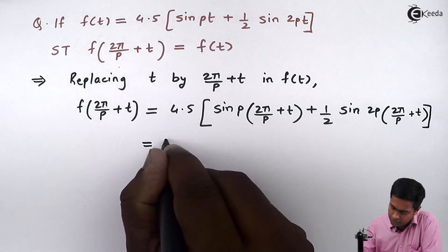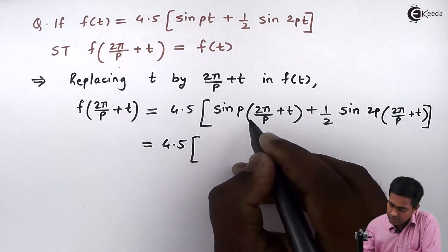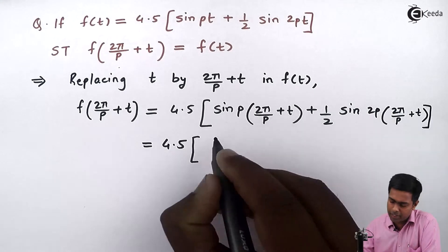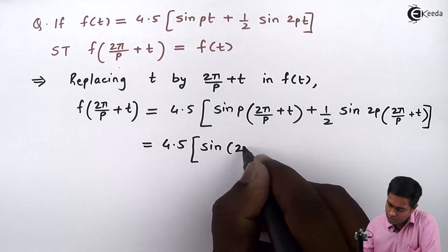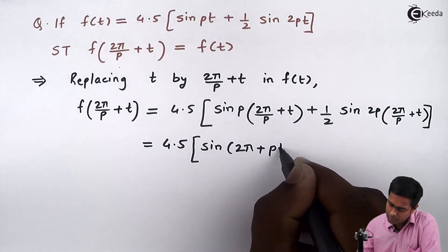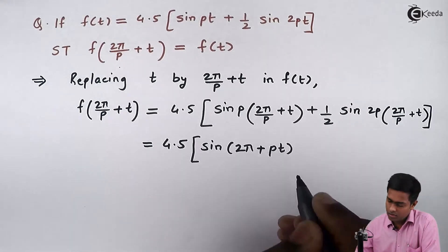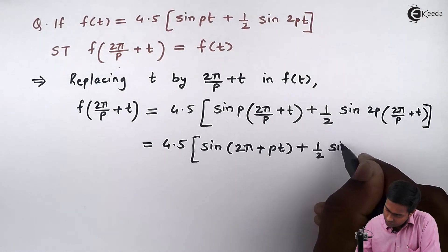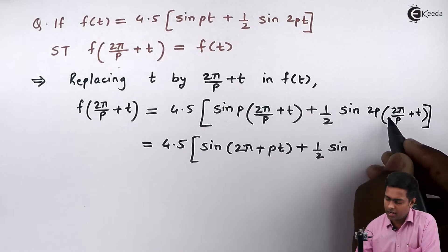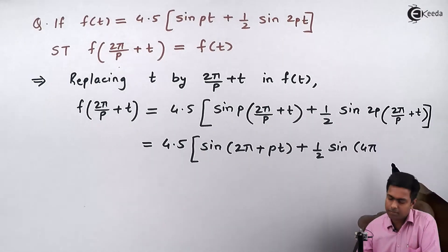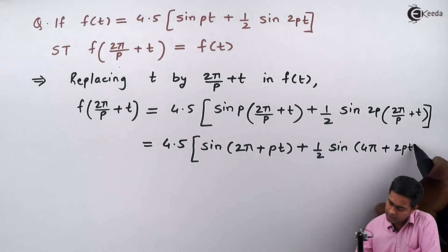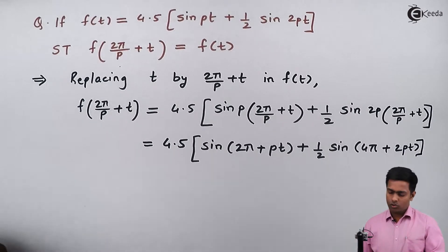By solving this we will get 4.5 inside the bracket. When p multiplies 2π/p, p and p cancel and we get sin of (2π + pt). Similarly, when 2p multiplies 2π/p, p and p cancel giving 4π, and 2p times t gives 2pt.